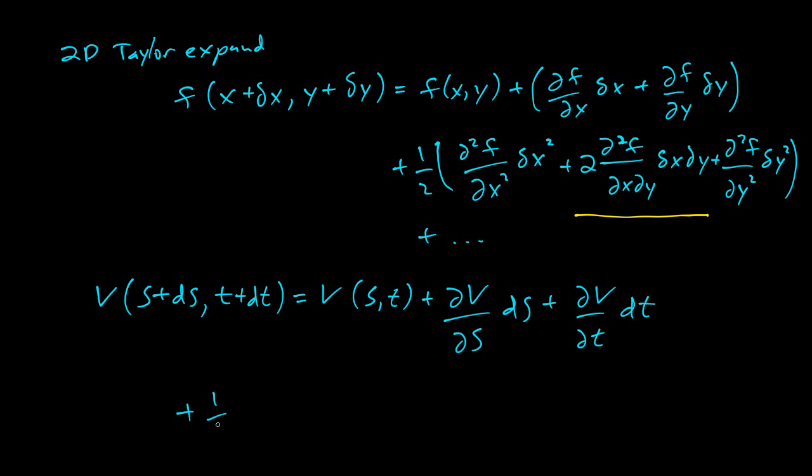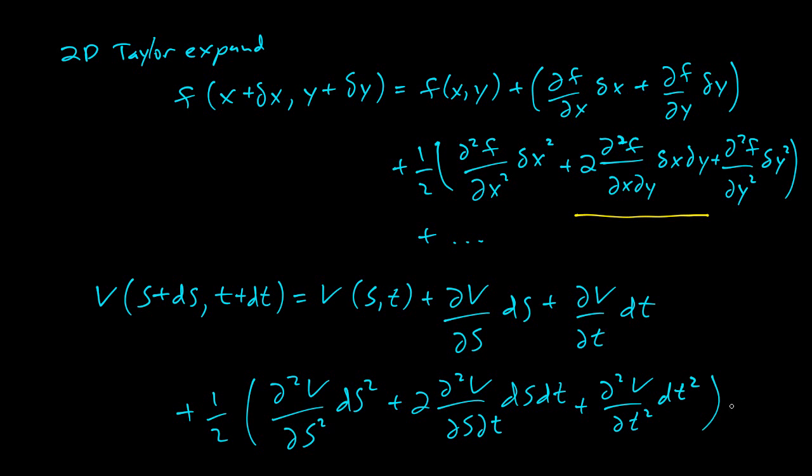And now we have the second order stuff. And so the second order stuff has the factor of one half. And we get the second derivative with respect to S, DS squared, plus the mixed one. And then DS, DT. And then the second derivative with respect to T, DT squared. And then we have the higher order stuff.